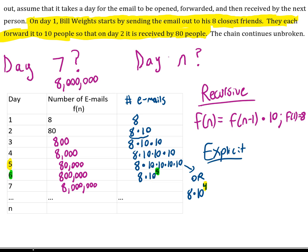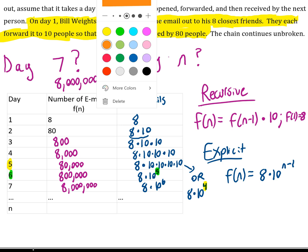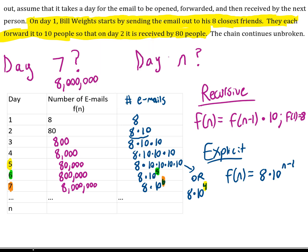An explicit rule for this situation, we know we're starting at 8. We're multiplying by 10. This would have to be N minus 1 because the exponent on the 10 every time, this one would be 10 to the sixth, is one less than the day number. So six is one less than seven. And so we can see that formula works for the entire table. So to answer the question of day N, we have this explicit formula right here: f(N) equals 8 times 10 to the N minus 1.